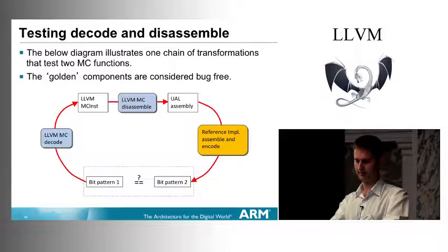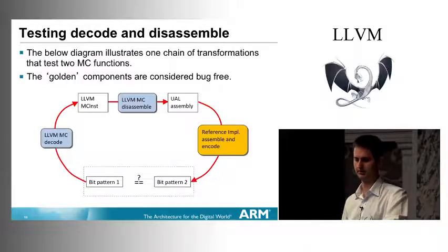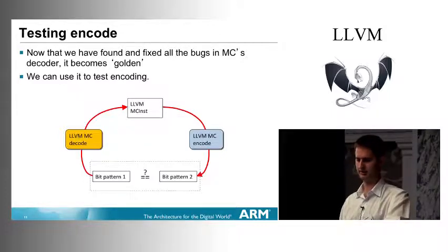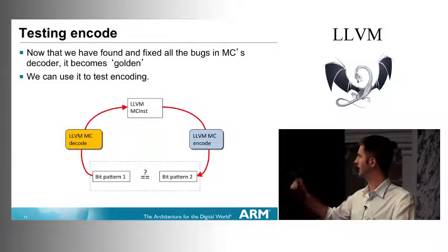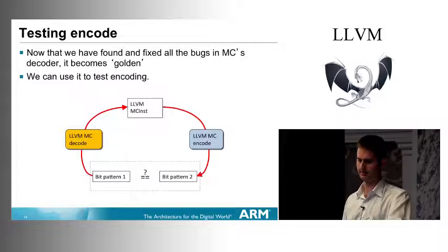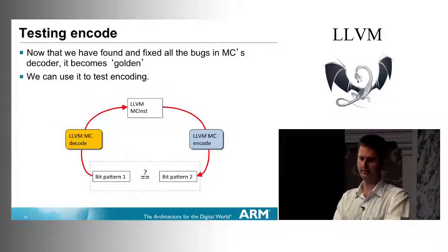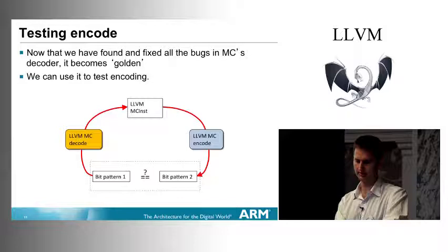The golden reference implementation is an assembler — something which takes a line of assembly and turns it into an instruction encoding. Once you have a perfect decoder, it becomes bug-free, and you can use it to test the encoder. You decode a bit pattern into the internal representation, re-encode it, and the two bit patterns should be the same. You only really need an assembler to start this process off.